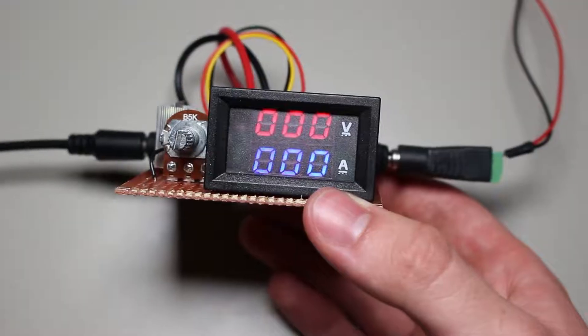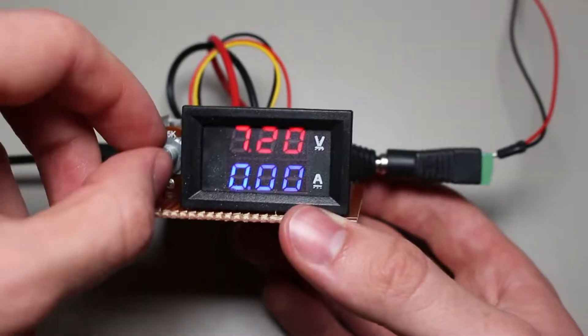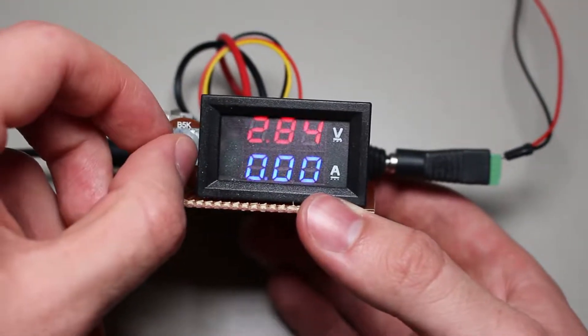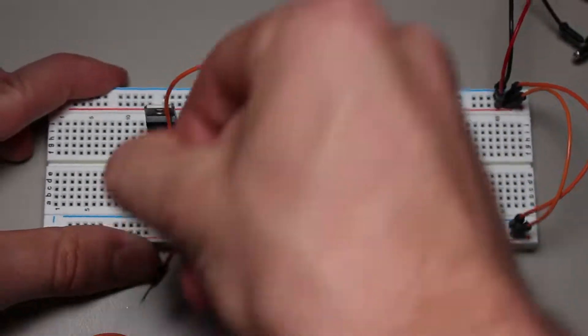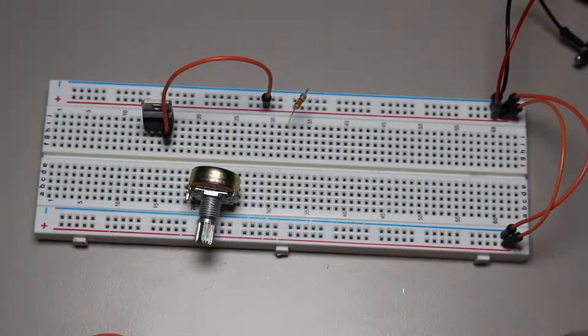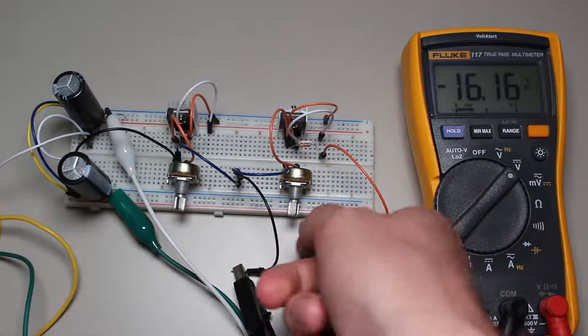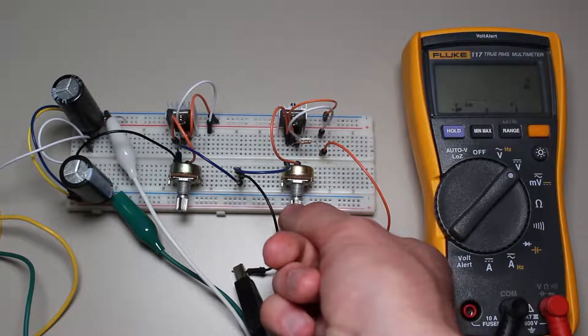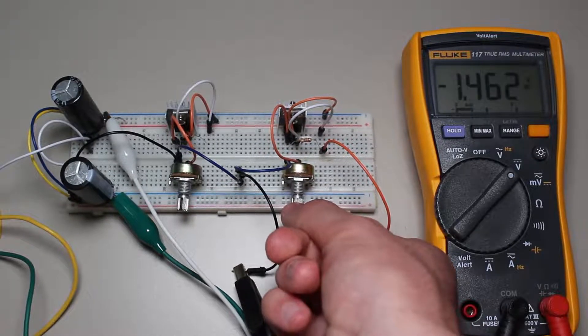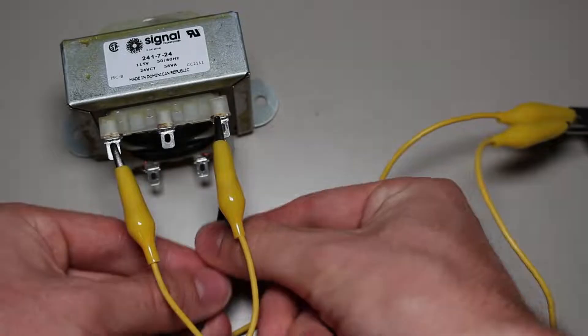While this was a good introduction to the LM317 and linear regulators in general, there are still a lot of applications that the LM317 can be put into that extend beyond the standard variable power supply that we made, with some of those applications being more useful than others. So, in this video we will explore the various other applications of the LM317. Let's begin!